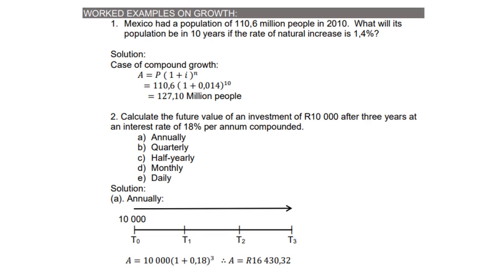Let's look at a worked example on growth. Mexico had a population of 110.6 million people in 2010. What will its population be in 10 years if the rate of natural increase is 1.4%? This is a case of compound growth, so A = P(1 + i)^n, where P = 110.6 and i = 0.014 (that is 1.4 ÷ 100), and n = 10. The answer is approximately 127.1 million people.